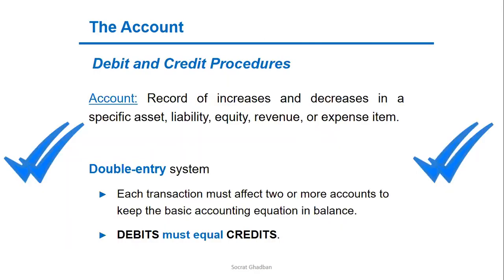In order to better understand the debit and credit procedures, we first define account, which is a record of increases and decreases in a specific asset, liability, equity, revenue, or expense item. The accounting system is a double-entry system, which means each transaction must affect two or more accounts to keep the basic accounting equation in balance. So at the end, we will have debits equal credits.